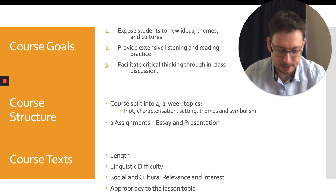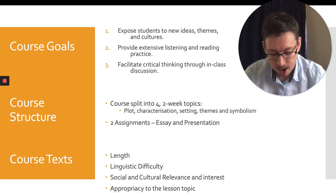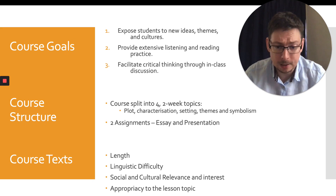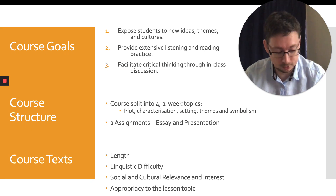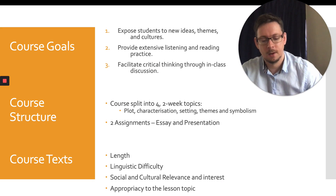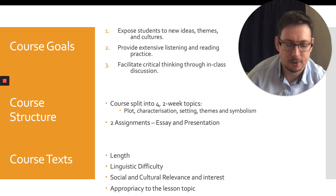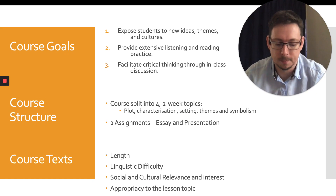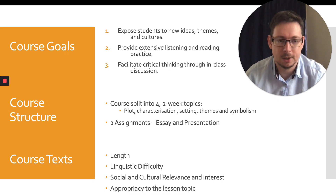Things I considered when selecting the texts were the length — films should be under two hours long and short stories no more than four pages long. Linguistic difficulty was also considered, as well as social and cultural relevance and interest to the students. I wanted to show students texts from a variety of genres and about different cultures, settings and periods. Lastly, appropriacy to the lesson topic — in this case plot, characterization, setting, themes and symbolism. Each film and short story was paired with a topic in order to provide students with a focus whilst watching or reading.